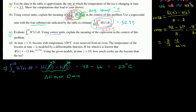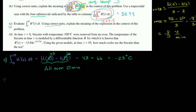Now let's do part D. At time T equals 0, biscuits with temperature 100 degrees were removed from an oven. The temperature of the biscuits at time T is modeled by a differentiable function B, for which it is known that B prime of T equals a given expression. Using the given models, at time T equals 10, how much cooler are the biscuits than the tea?